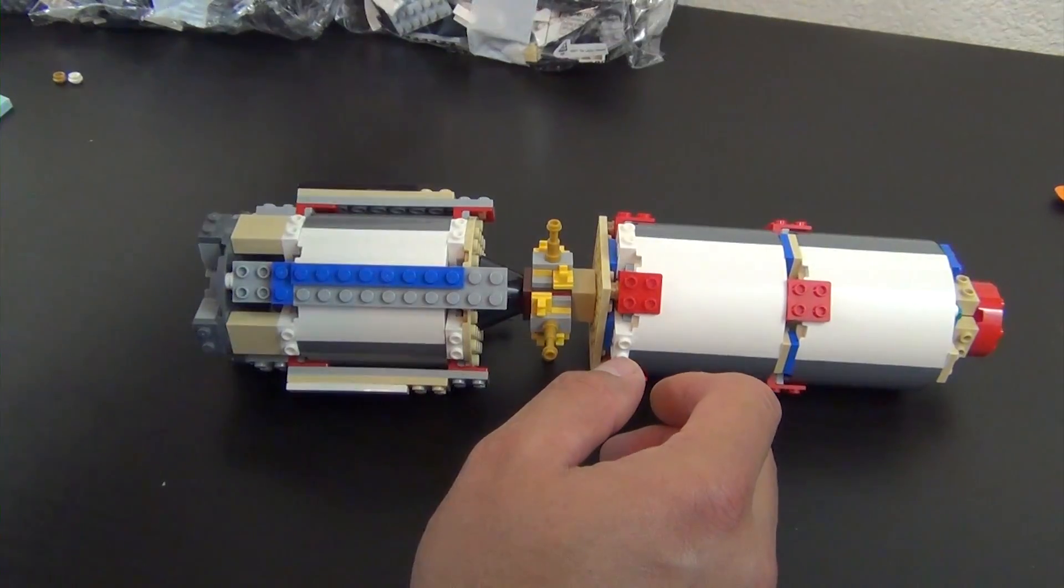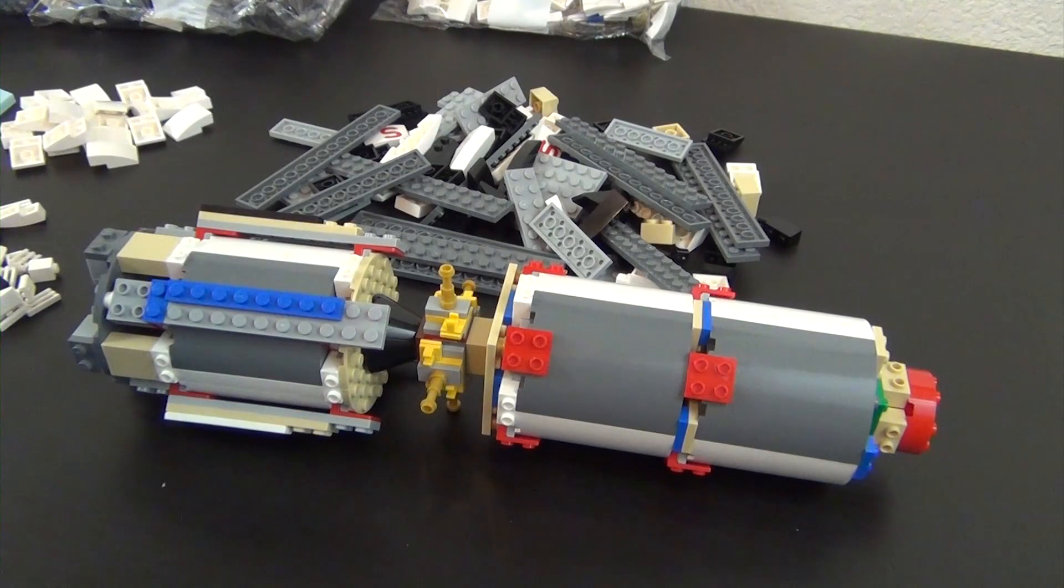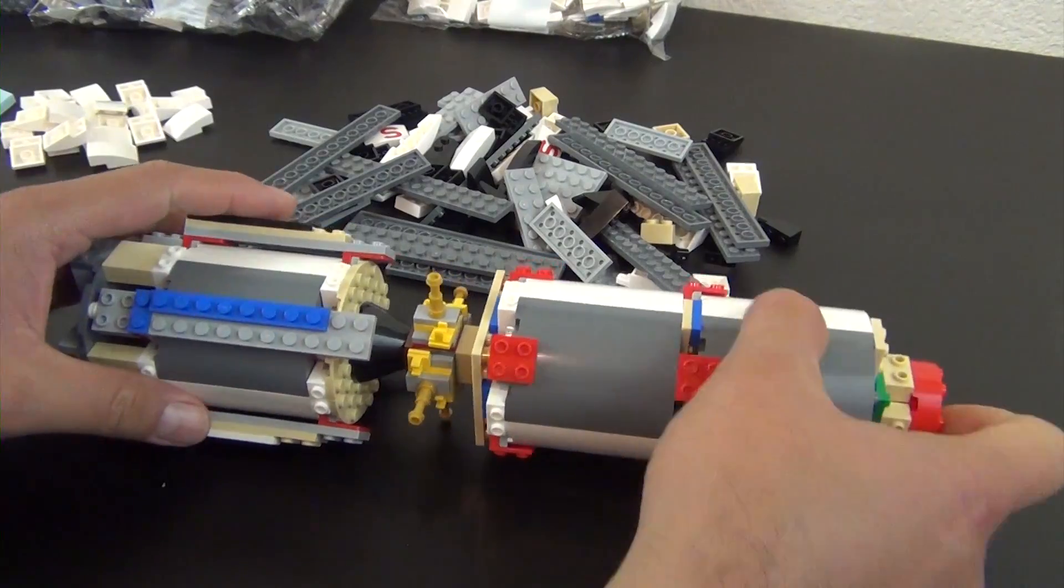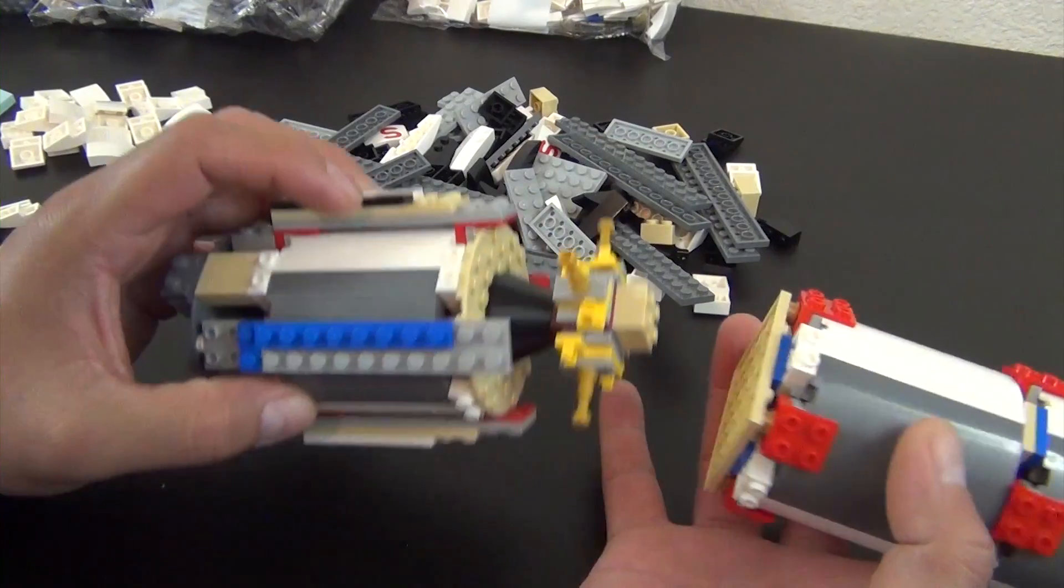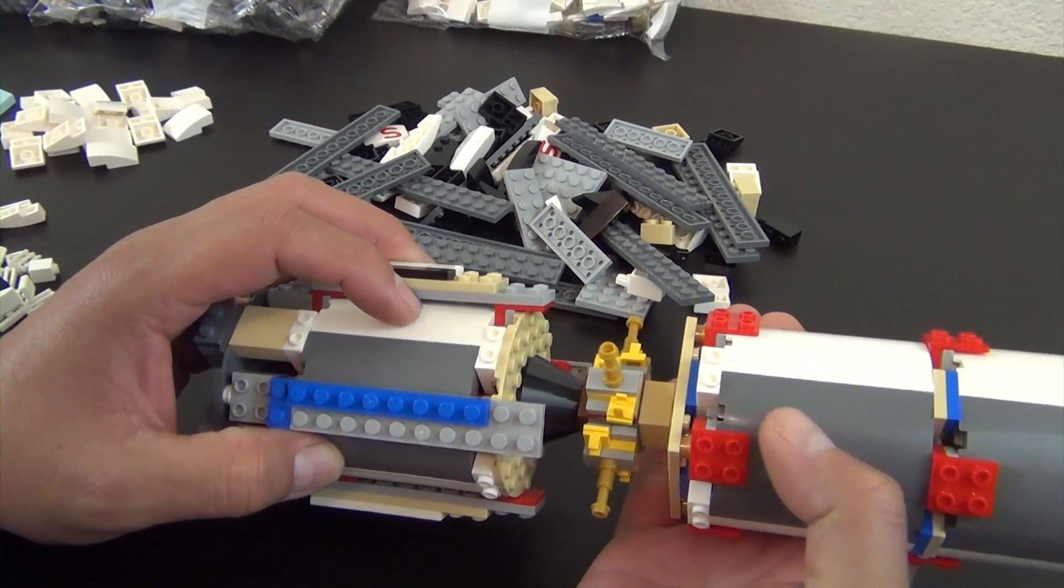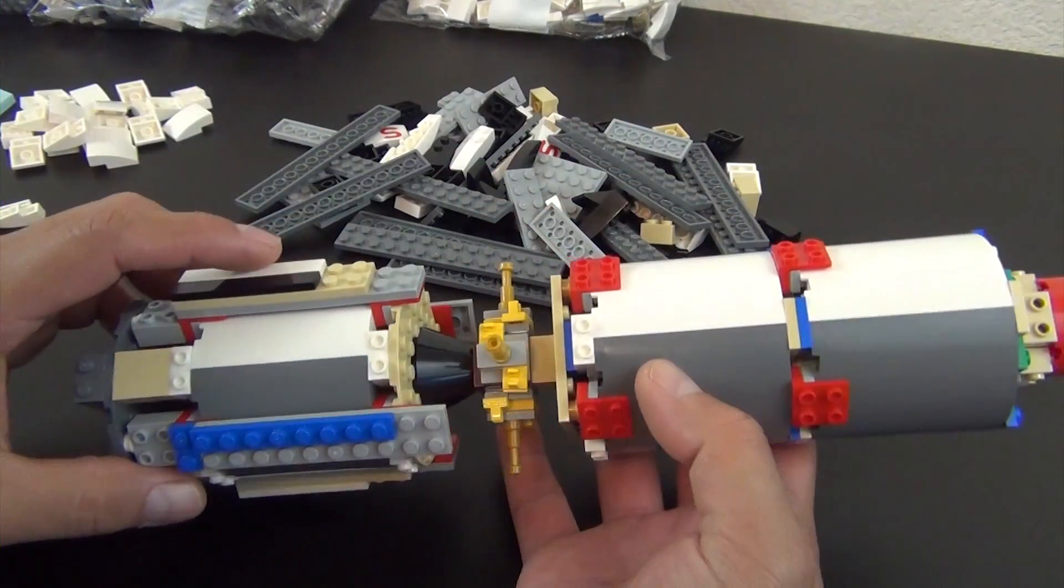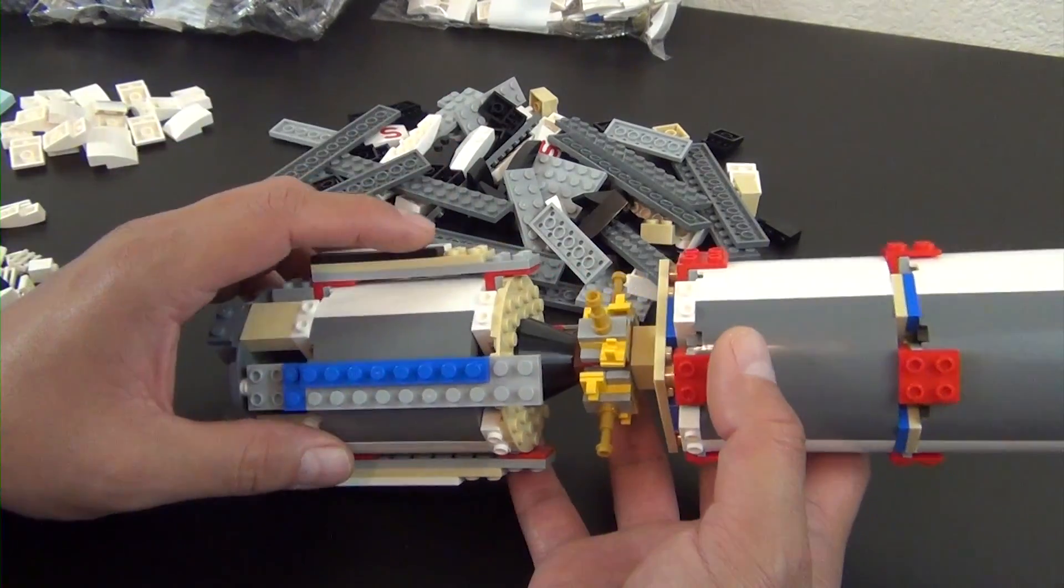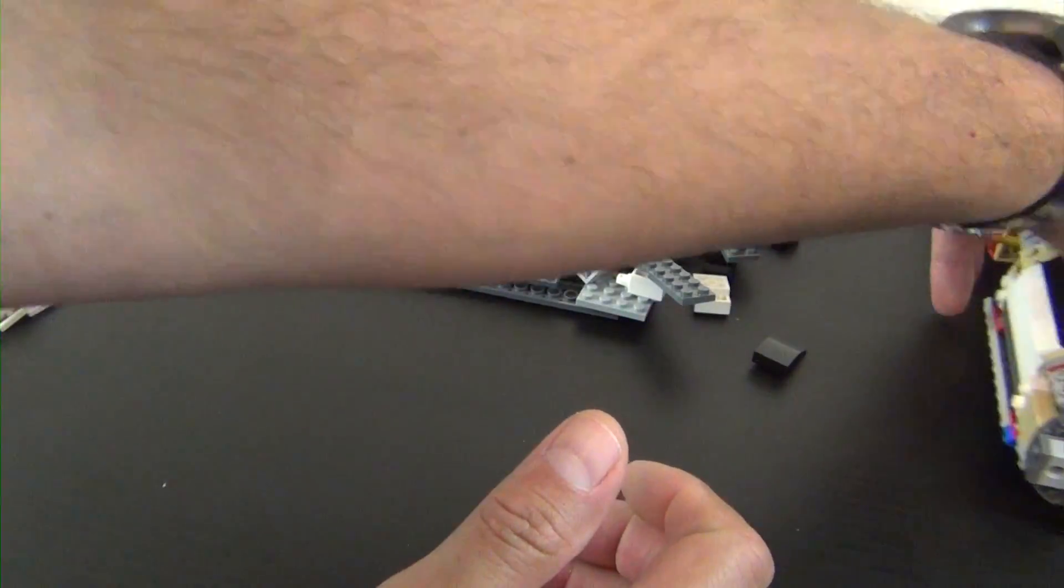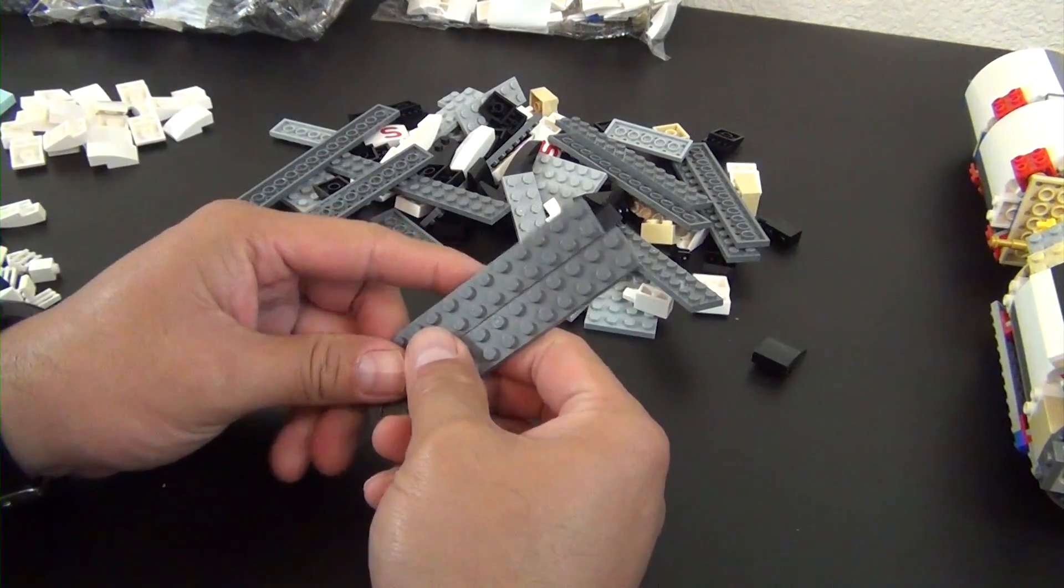So that completes bag number one, so now we're going to go ahead and move on to bag number two. All right, we have all of our bag two parts out. And before we move on, I wanted to show you that I did go back and reorient these pieces here because it was kind of bugging me. The instructions show the colors of these curved panels to line up like this, and what I did is I actually had these on the wrong brackets. That's all it really was to fix it, wasn't that big of a deal.